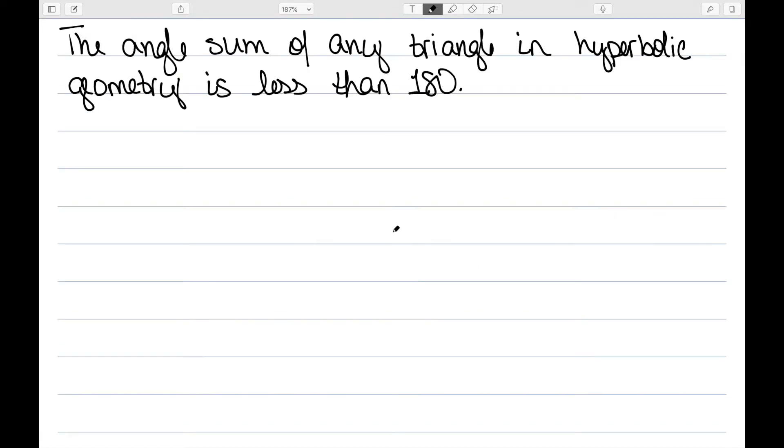The first big result for hyperbolic geometry is the angle sum of any triangle in hyperbolic geometry is less than 180. And I won't prove this directly here, but if you're interested, there are lots of proofs online of how we go about getting this.